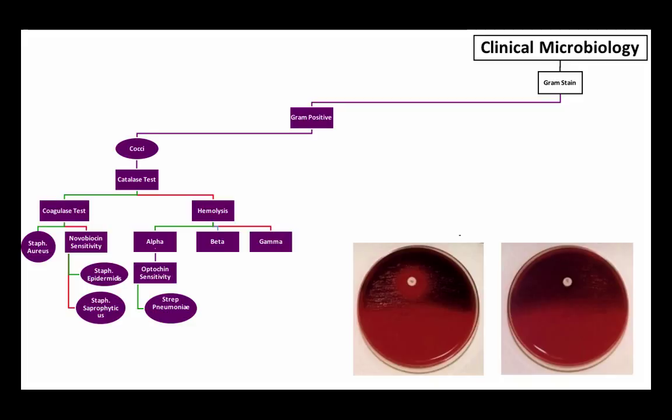Now for each of these groups of streptococci based on hemolysis, there are only two bacteria in each of those groups. So we only need one test to differentiate between them. For the alpha hemolytic streptococci, we use what's called an optochin sensitivity test. That's similar to the coagulase negative staphylococci where we use the novobiocin sensitivity test.